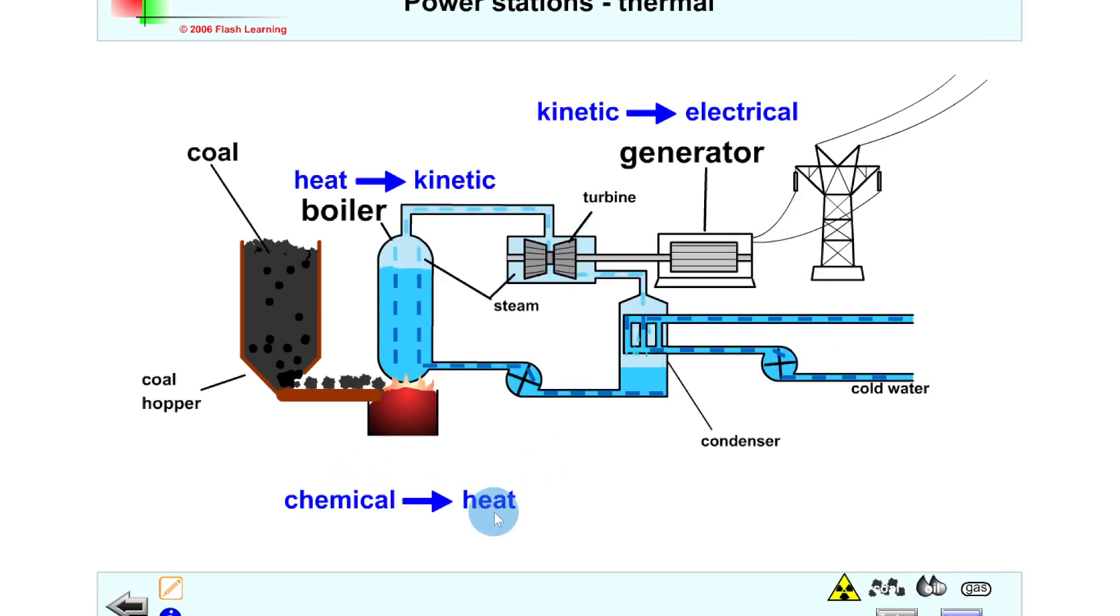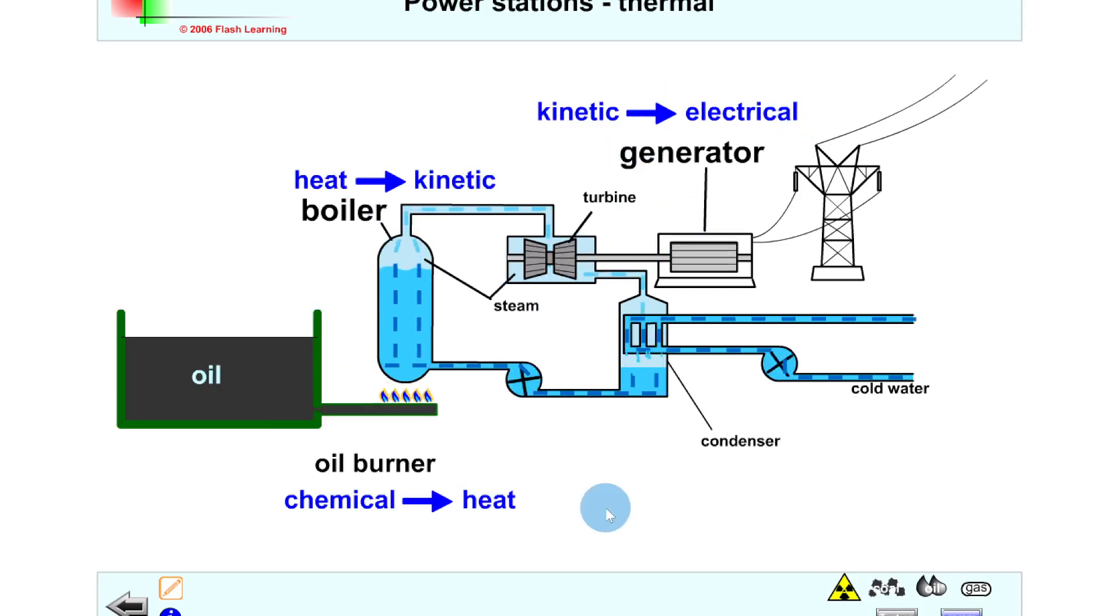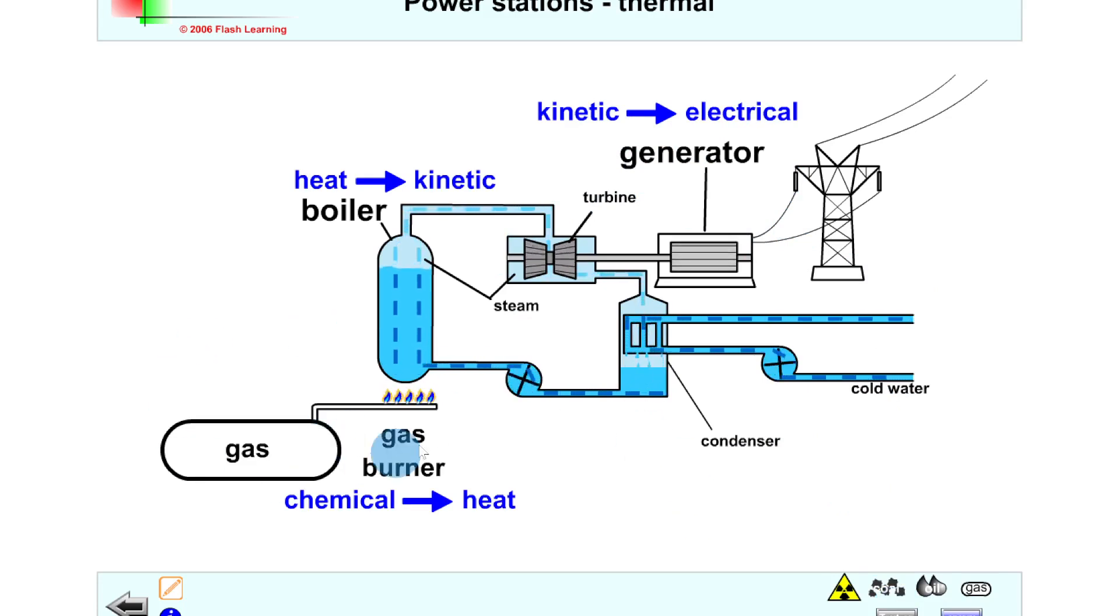You've got chemical to heat first of all, then heat to kinetic to drive the turbine, and then kinetic to electrical. And it's very similar for a fossil fuel power station that uses oil as the source. If you've got oil here and you burn the oil, then you get chemical to heat, then heat to kinetic, and kinetic to electrical again. The rest of the steps are the same. And lastly for gas, we could have a gas burner here. So again we've got chemical to heat, heat to kinetic, and kinetic to electrical.